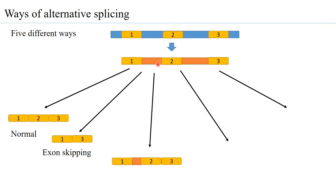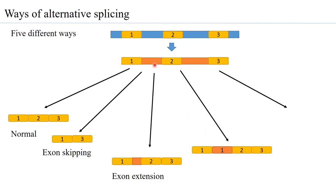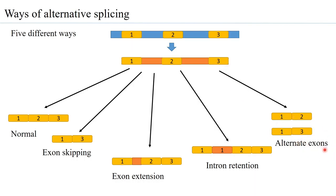If an intron has two five-prime splice sites — two donor sites — the spliceosome machinery may recognize an internal donor site, leaving a portion of the intron unspliced and retained with exon 1. This is called exon extension. Another possibility is that an entire intron is retained alongside all three exons — this is intron retention. Additionally, one exon can be present with either exon 2 or exon 3 but not both, giving rise to what is called alternate exons.